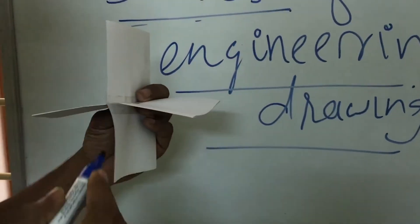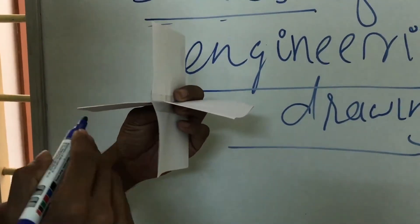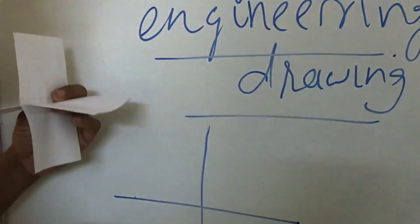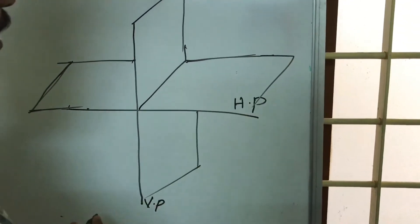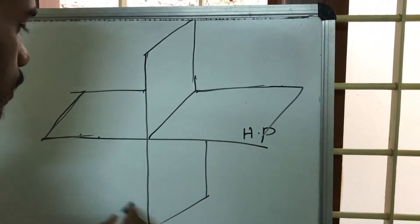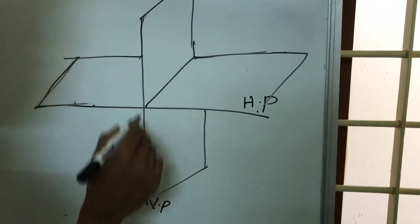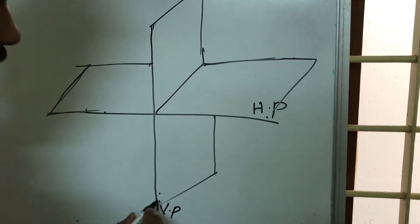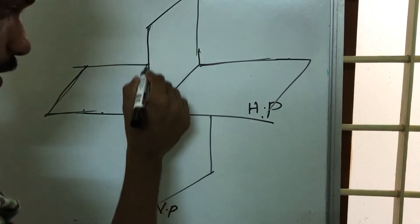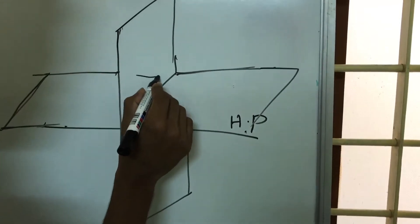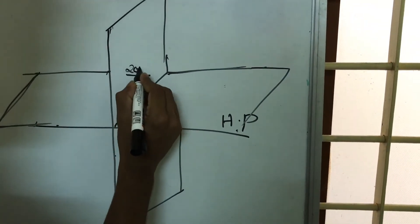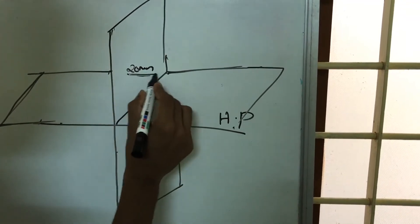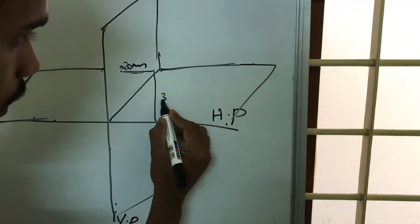These lines represent the vertical plane and horizontal plane. Now look at a point in a quadrant — this is the vertical plane and this is the horizontal plane. The point is 20mm in front of the vertical plane and 30mm above the horizontal plane.